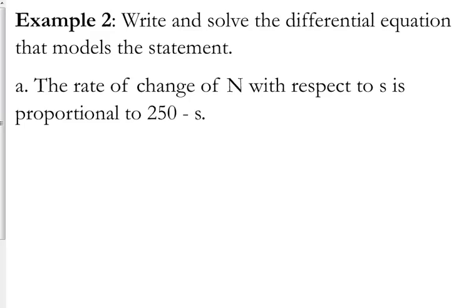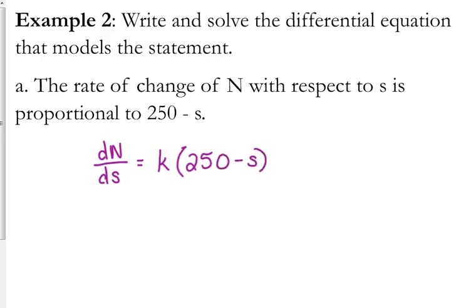The next example says: write and solve the differential equation that models the statement — 'The rate of change of n with respect to s is proportional to 250 minus s.' The rate of change of n with respect to s translates to dn over ds. Anytime you see 'rate of change,' you're thinking derivative of n with respect to s. 'Is proportional to' means you need a constant of variation — that's usually k — times 250 minus s.